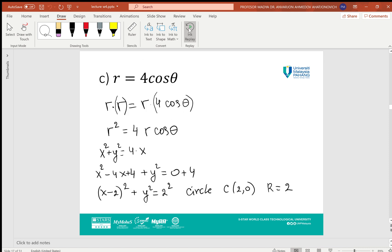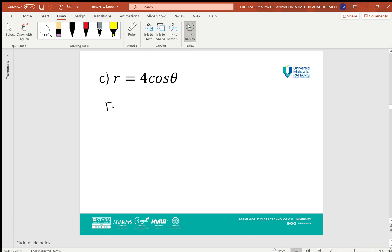Part c: r = 4 cos θ. To transfer this to rectangular, we multiply both sides by r. On the left side, we get r², and on the right side, 4r cos θ. Taking into account the definitions of x and y in polar coordinates, we obtain x² + y² = 4x. Taking 4x to the left side and completing the square for terms containing x, we get (x - 2)² + y² = 4. This is a circle of radius 2 centered at the point (2, 0).